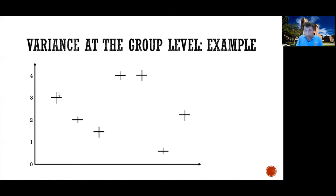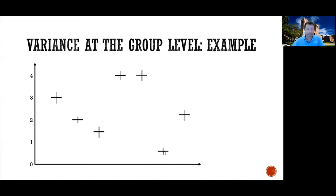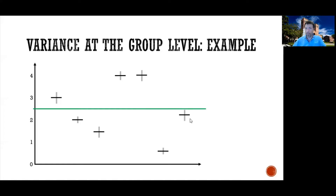If you look at the participants as a whole, what is the average advantage when participants used my strategy compared to not? One participant had three on average, one did two, one did one and a half, a couple did four, one had only about 0.5 advantage, and one maybe 2.25. So on average across all of my sample, the average advantage for using my strategy was 2.5. This is the estimation — we've just estimated our effect.